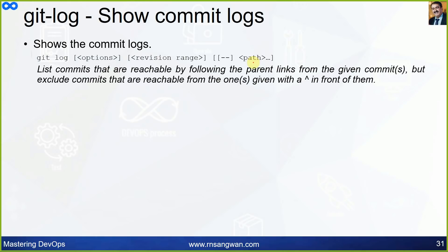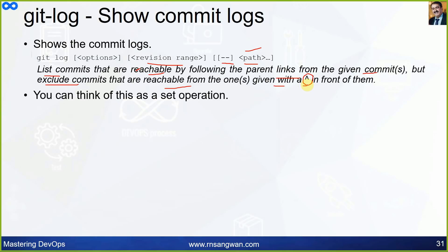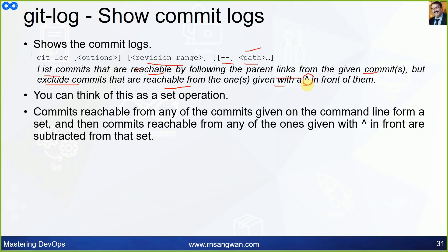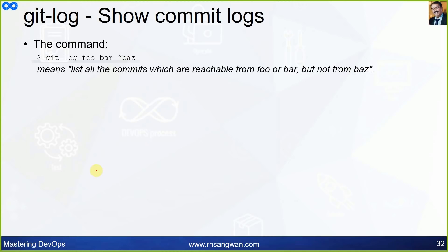'git log' shows commit logs. The syntax is: 'git log [options] [revision range] [-- path]'. It lists commits reachable by following parent links from given commits, but excludes commits reachable from those given with a caret (^) symbol — a negation. For example, 'git log foo bar ^baz' lists all commits reachable from foo or bar but not baz.